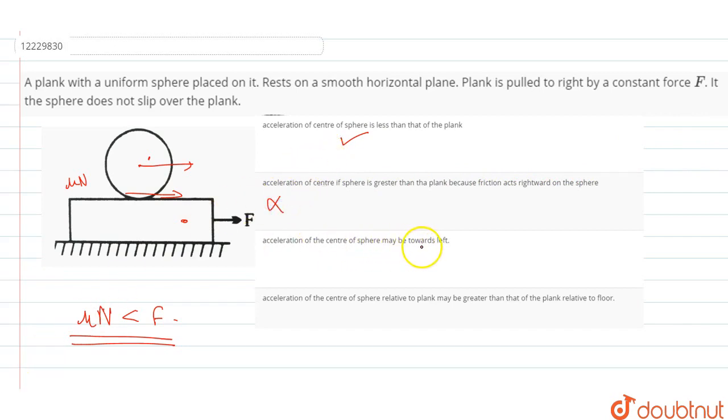Acceleration of the center of the sphere may be towards left. So this option is obviously correct. If I am standing on the ground respect, I will see. So this is my sphere with force towards the right. The other side of the sphere is also moving forward.